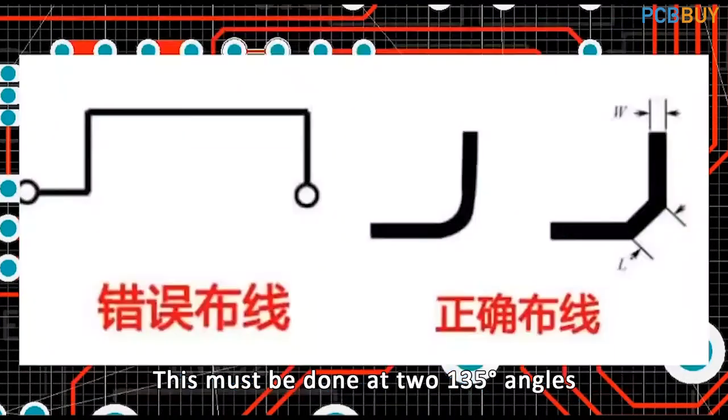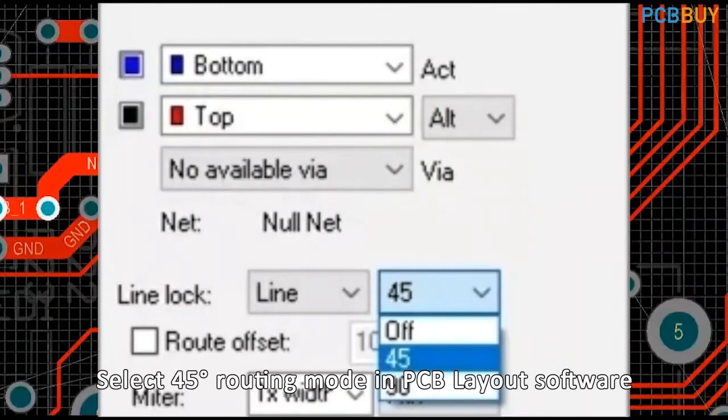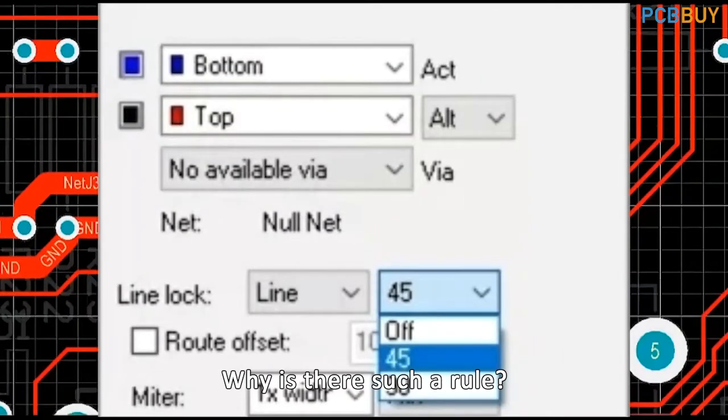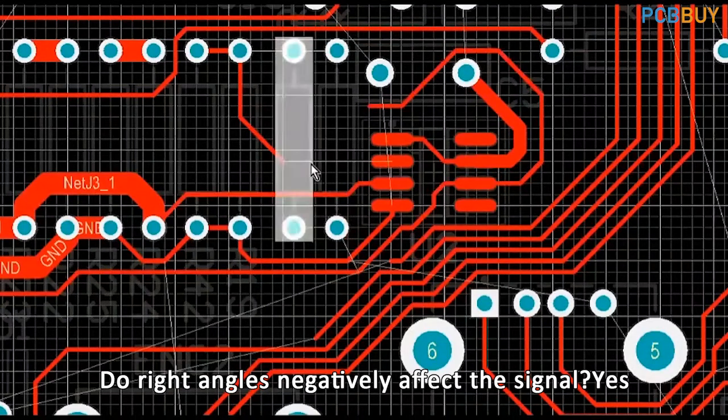This must be done at two 135 degree angles. Select 45 degree routing mode in PCB layout software. Why is there such a rule? Do right angles negatively affect the signal? Yes.